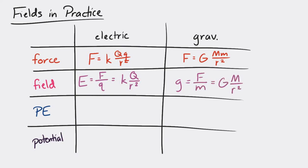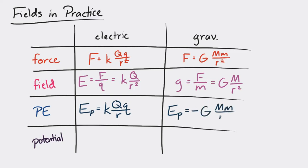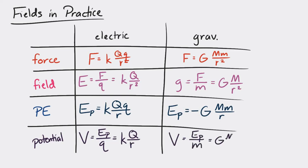There's potential energy — the potential energy for an electric situation is given by one equation and for a gravitational situation it's given by another. Then for potential we can do a little bit of math and get these expressions. You may notice, looking at these equations, there are many, many similarities.